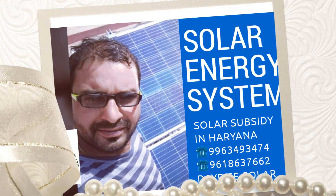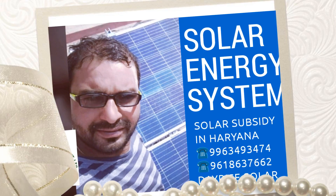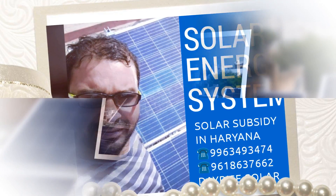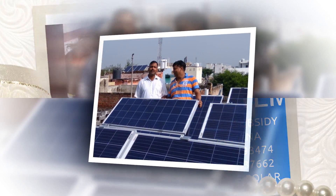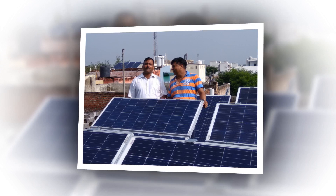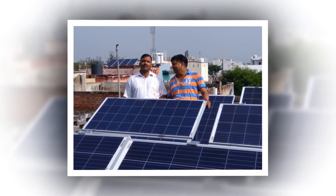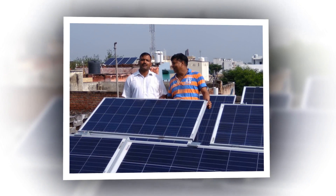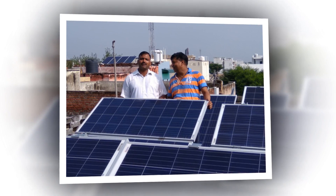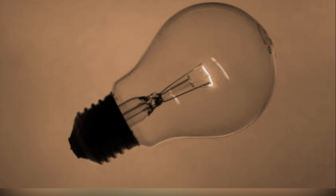What is the annual energy generated from a 1kWP Solar Power Plant? A 1kW Grid Connected Rooftop Solar Power Plant is considered to generate electric units ranging from 1,200 to 1,500 units per annum, as per sunlight conditions.